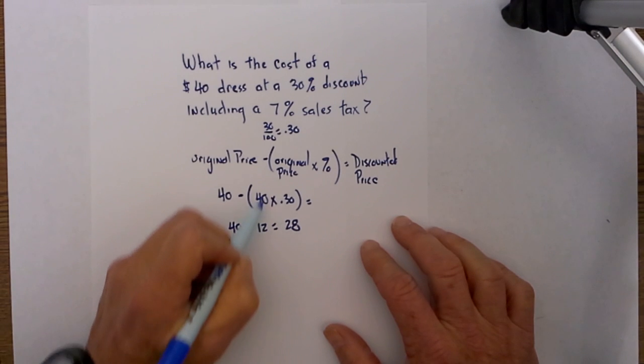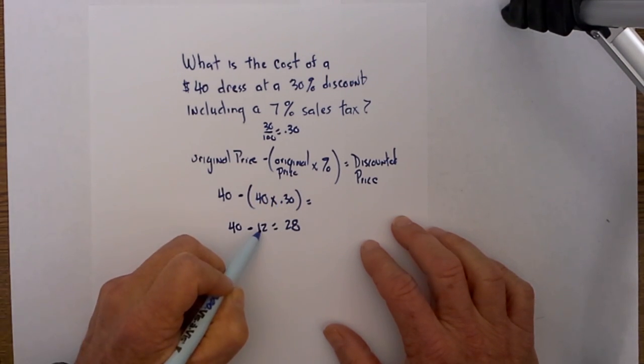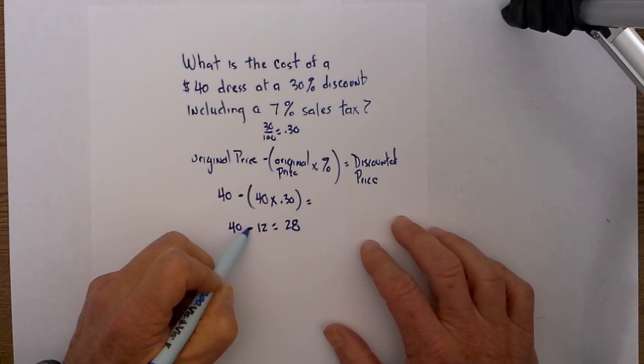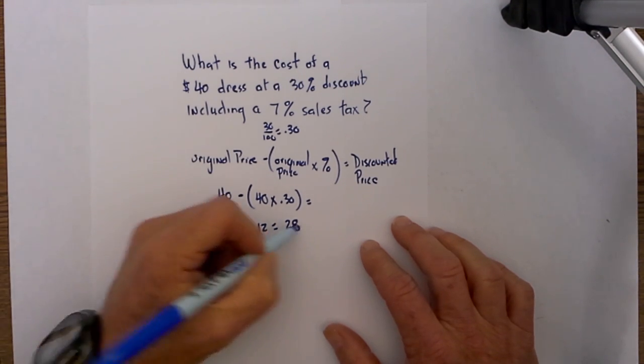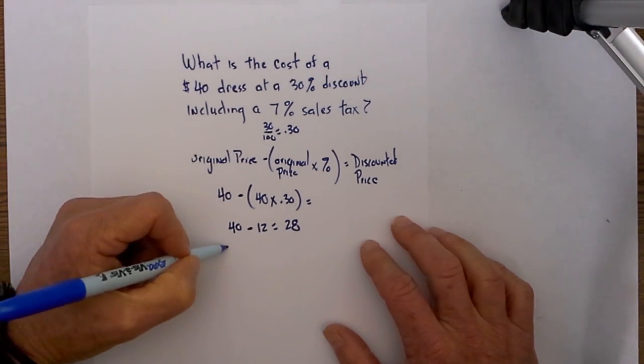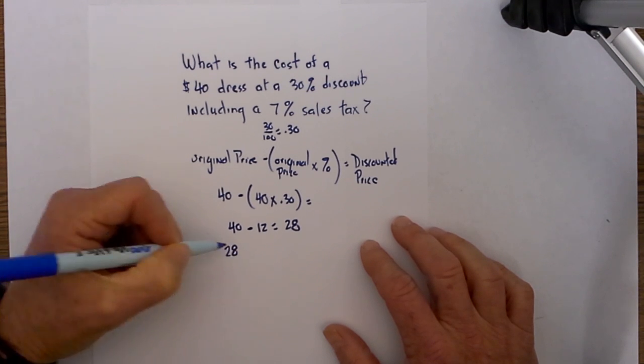Again, I get the 12 by taking 40 times 0.3, which equals 12. 40 minus 12 is 28. That is step one. Then I take 28 and multiply it by the sales tax.